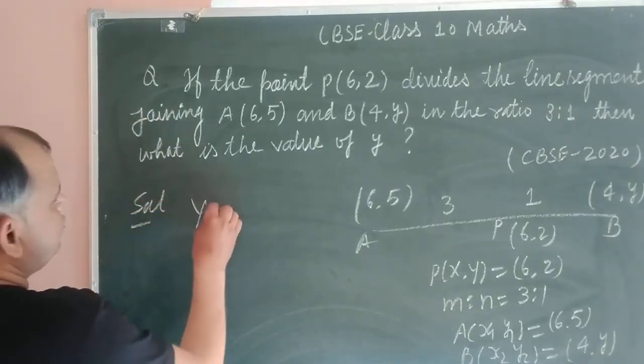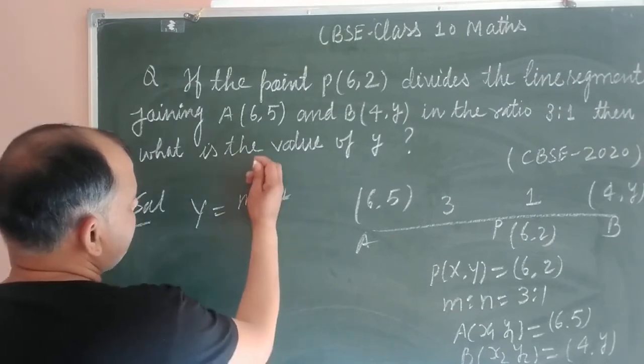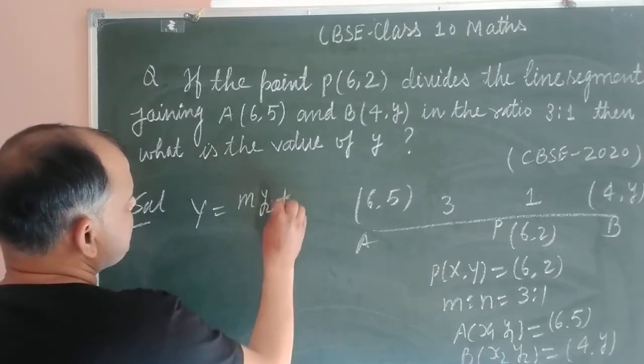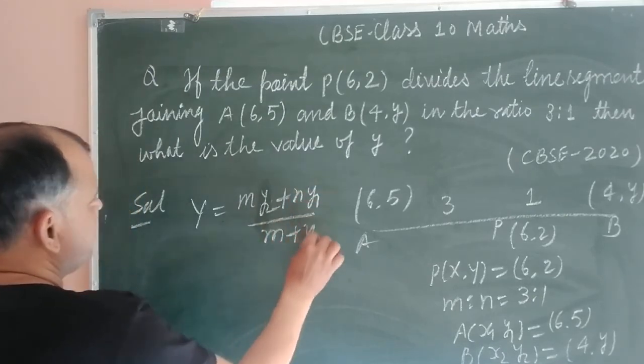Using the section formula: Y coordinate = (m×Y2 + n×Y1)/(m+n).